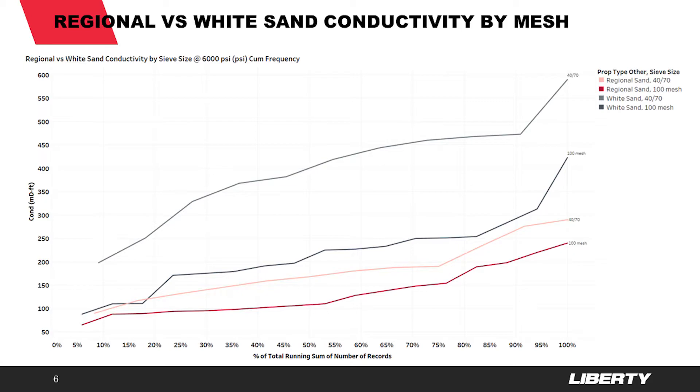Now that local mines are prevalent, it helps us compare regional and white sand. This plot shows we are able to achieve higher conductivity using white sand over regional sand.